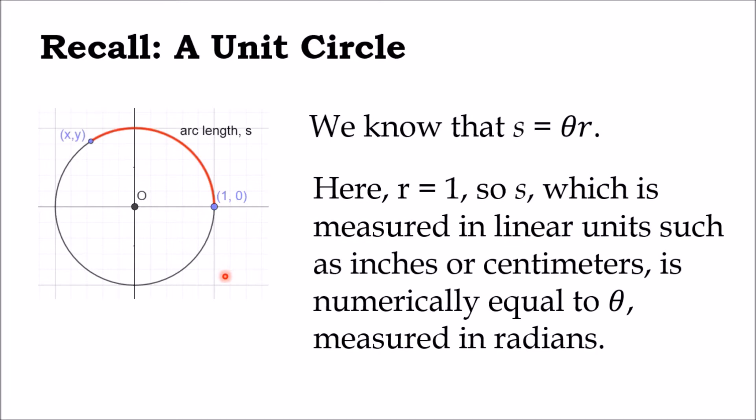We also have learned from the previous topics that the arc length of a circle is the product of the central angle theta in radian measure and radius R. Here, in the illustration of a unit circle, R is equal to 1.